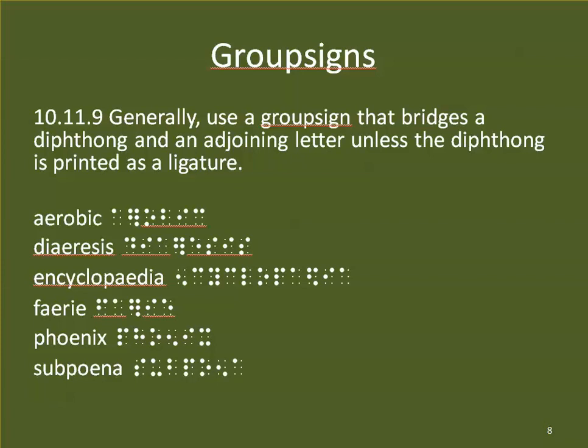Generally, we use a group sign that bridges a diphthong and an adjoining letter unless the diphthong is printed as a ligature — unless the letters are physically joined together in print, which is rare but does happen. So if they're just spelled out, like in 'aerobic' (A-E-R-O-B-I-C), the A and E are not joined in print, so we can use the ER contraction in that word. Same for diuresis, encyclopedia, ferry, phoenix, and subpoena.